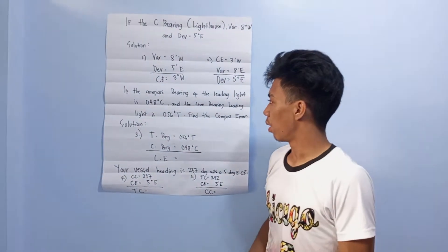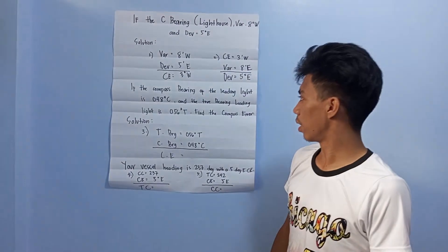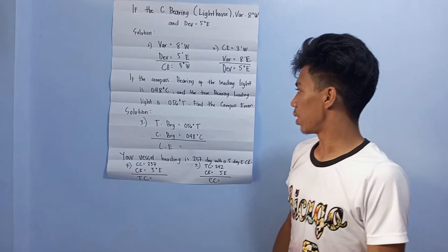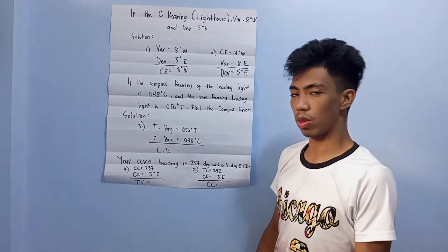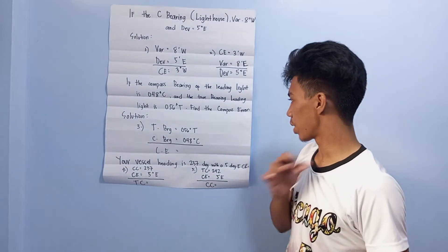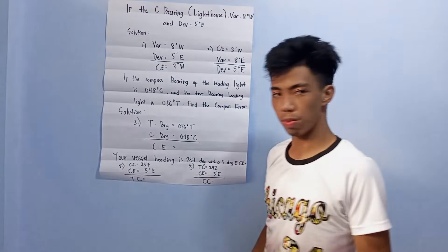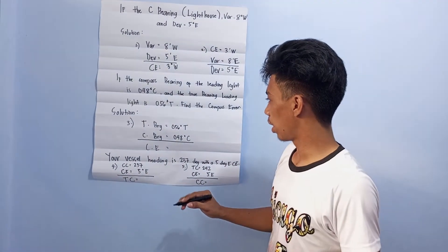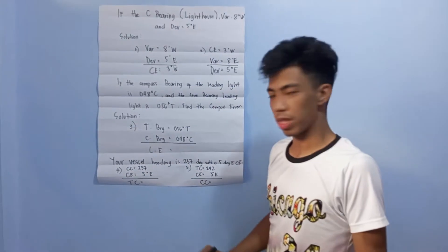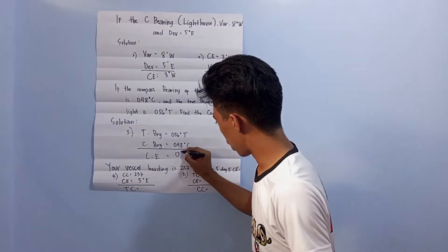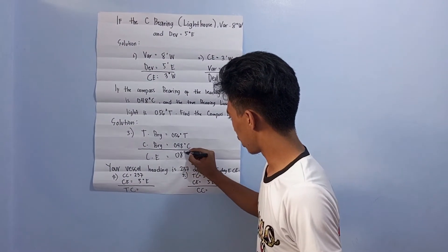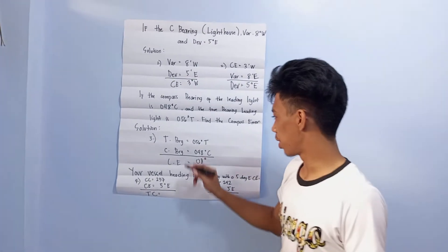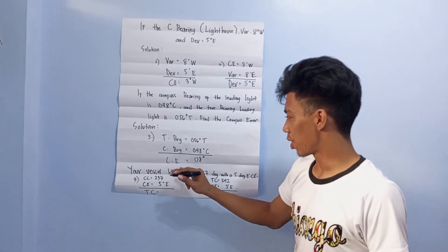Third question: if the compass bearing of the leading light is 048 degrees compass and the true bearing is 056 degrees true, find the compass error. Just simply subtract the true bearing and compass bearing. The answer is 08 degrees compass error.